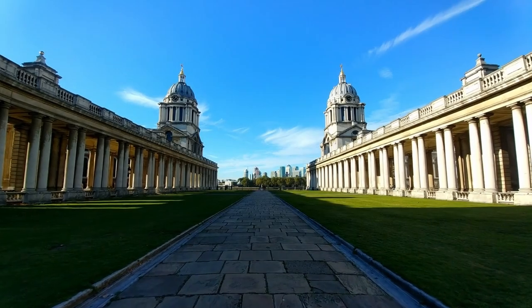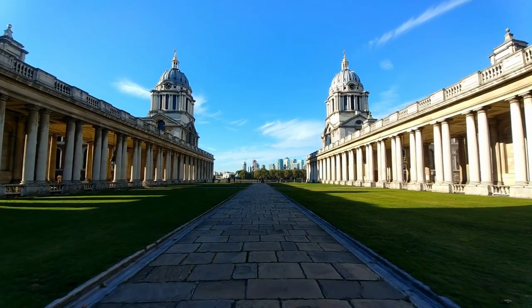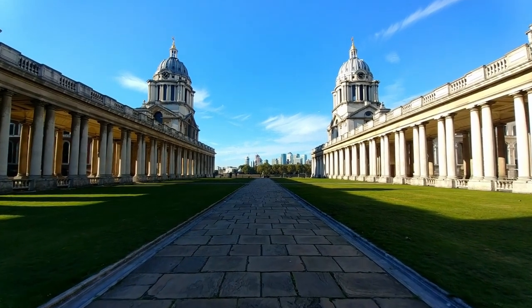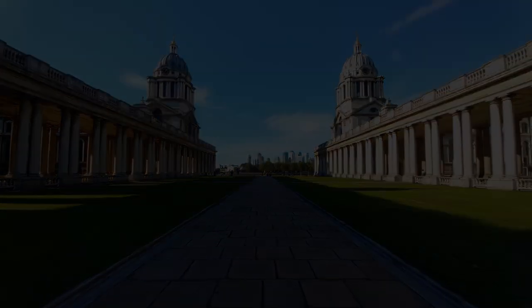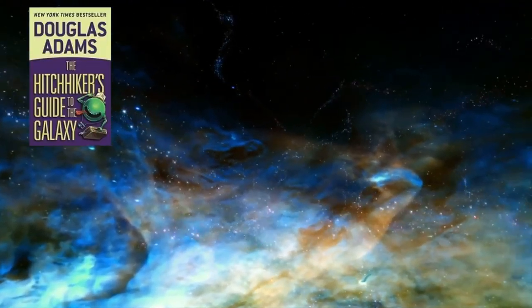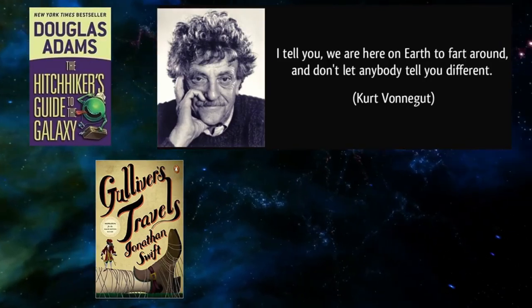Every creation, regardless how novel it seems, always draws inspiration from something old. Every new idea grows out of previous ideas — it is not pure firstness. Picasso said 'bad artists copy, good artists steal.' Elon Musk has cited The Hitchhiker's Guide to the Galaxy by Douglas Adams as most influential to him. Adams expressed admiration for Kurt Vonnegut, who was influenced by Jonathan Swift's Gulliver's Travels. Every new creation traces back through a lineage of prior ideas.